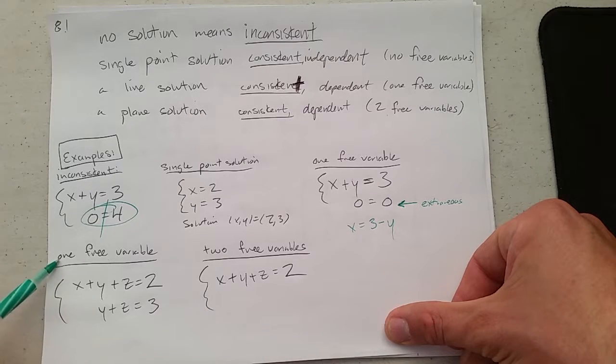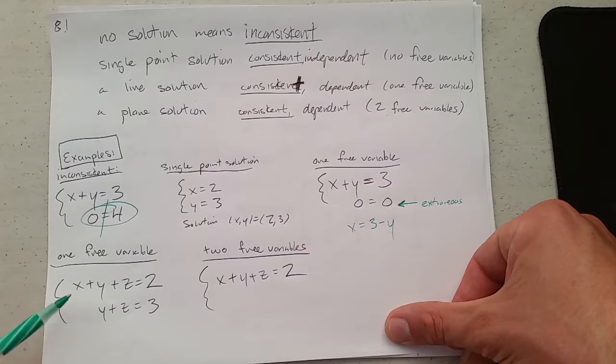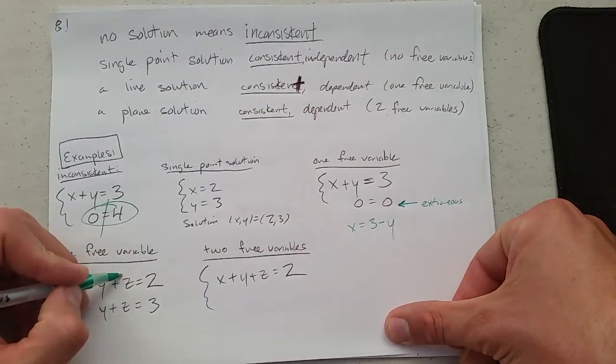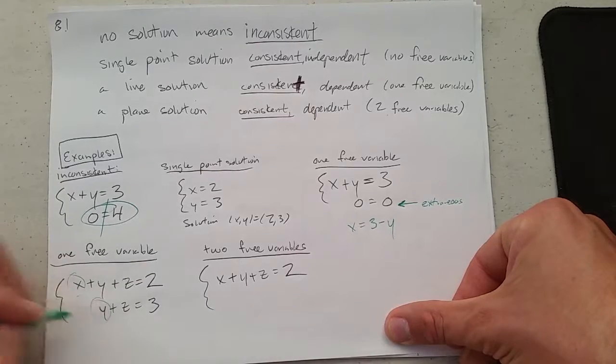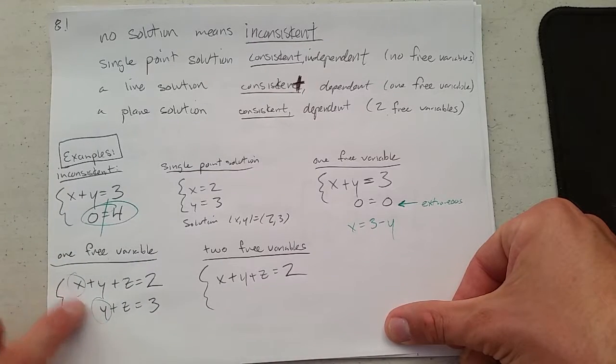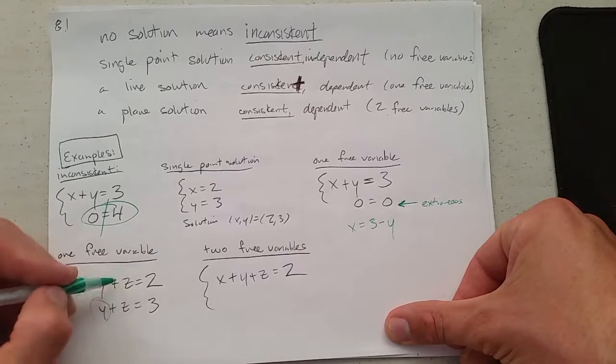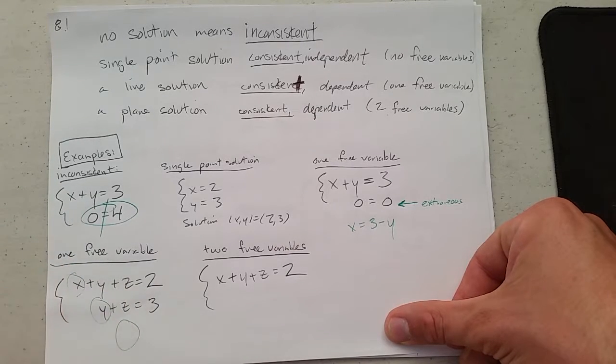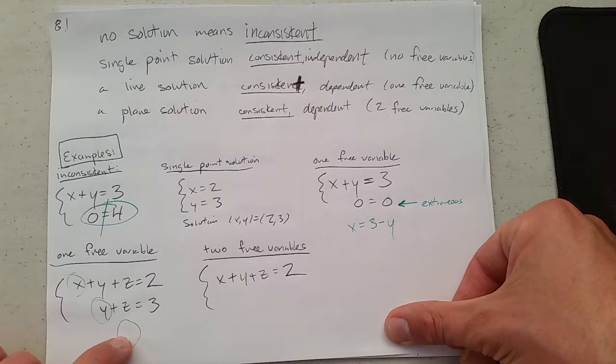So we're going to look more at this later as to exactly why there's a free variable. It comes down to looking at the columns right here. So these actually fix X and Y. Z, there's nothing here to fix Z, so Z is going to be free. And this will make a lot more sense when we look at matrices.